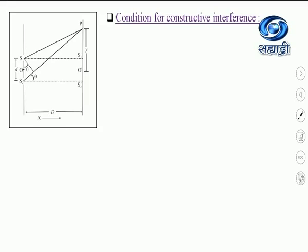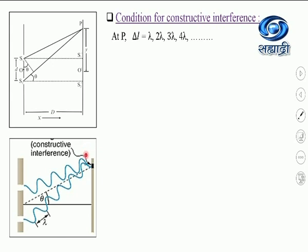We have the experimental setup of Young's double slit experiment. It is a cross section of the experimental setup and we are considering point P on the screen, which is at distance y from the central bright point. If point P is the point due to constructive interference, then the crest of the wave emitted by S1 should overlap with the crest of the wave emitted by S2. When the crest of two waves overlap, the point obtained on the screen is the point due to constructive interference, or when the troughs of the two waves overlap, the point is also due to constructive interference. So it is the bright point obtained on the screen.